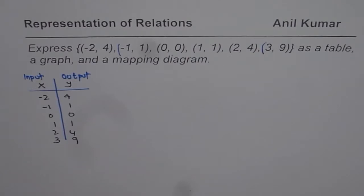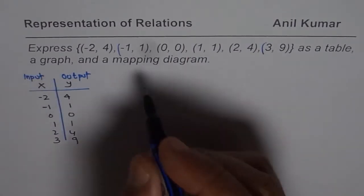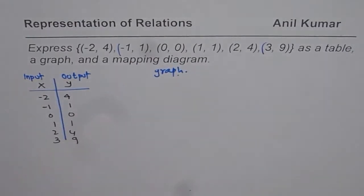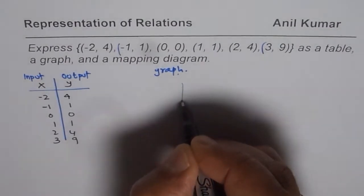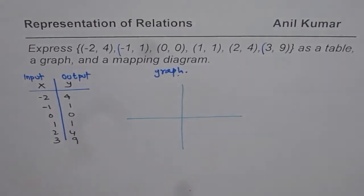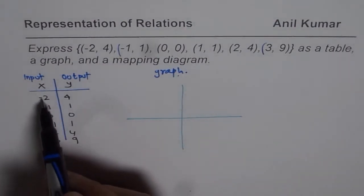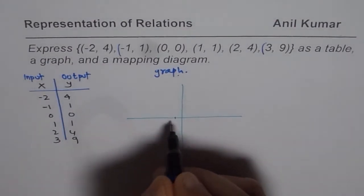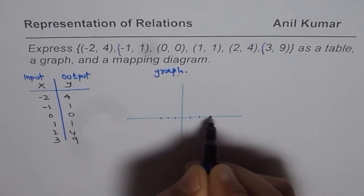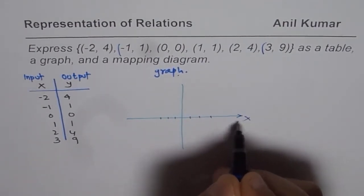Now let us see how to represent this on a graph. The best graph for this will be a scatter plot. We show these points on the coordinate system. The x values range from minus two to three, with negative values on the left side and one, two, and three on the positive side along the x-axis.